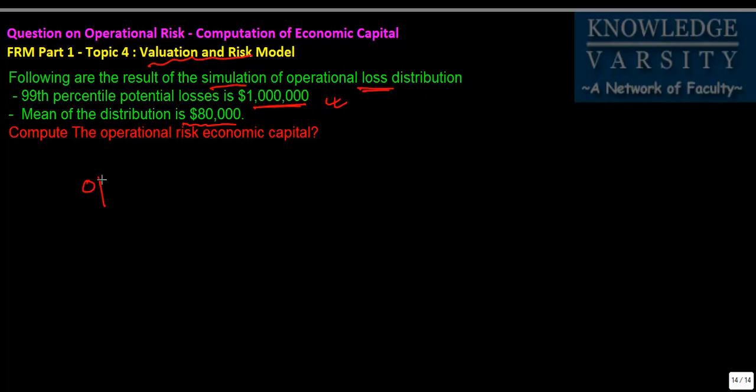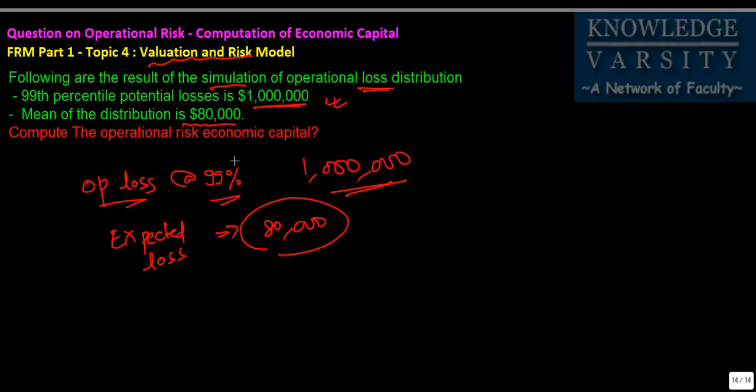What you have is the operational risk losses at 99 percentile level comes to 1 million dollars, and the mean of the distribution, that is the expected loss, comes to 80,000 dollars. They are asking us how much money should be allocated to the economic capital.